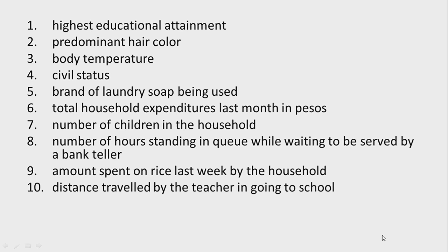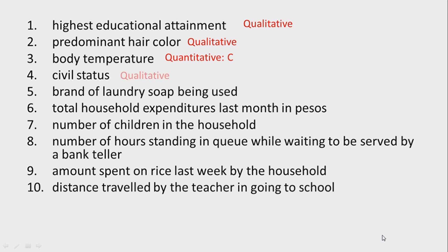Now let's answer. Number 1: highest educational attainment — qualitative; you could just answer elementary, high school, or undergrad. Number 2: predominant hair color — also qualitative. Number 3: body temperature — quantitative and continuous, because you have to measure it. Number 4: civil status — qualitative. Number 5: brand of laundry soap being used — qualitative.